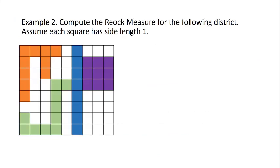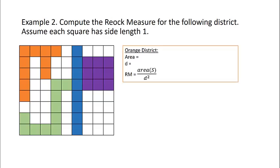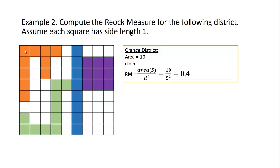We're going to go back to the same districts and compute the REOCK measure, again assuming each square has a side length of 1. Starting with the orange district: the area is 10, as we saw before. The maximum height or width within the orange district is 5 squares, so D equals 5. Our formula gives us a REOCK measure of 10 divided by 5 squared, so the REOCK measure of the orange district is 0.4.